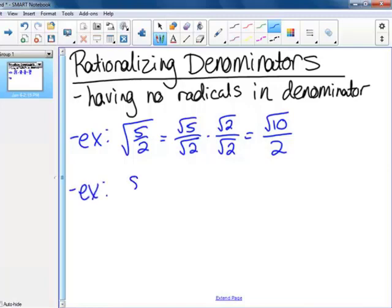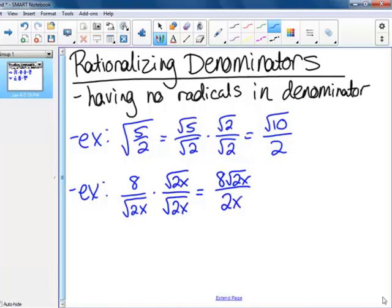How about this one? Let's do 8 over the square root of 2x. It looks similar, but now I've got an x there too. I'm going to multiply by square root of 2x on top and bottom. That means I have 8 square root of 2x on top. Square root of 2x times square root of 2x is just 2x on the bottom. Now I could simplify. Sometimes you can simplify after you rationalize. The 2 cancels the 8, leaving 4. So this is 4 square root of 2x over x.